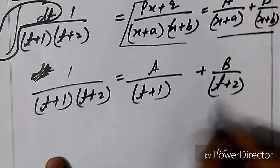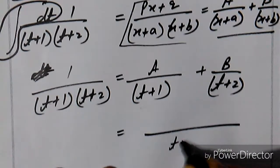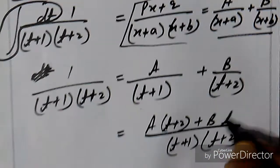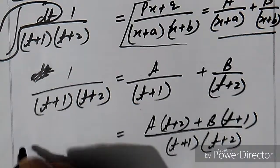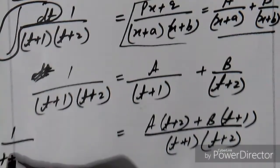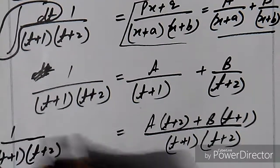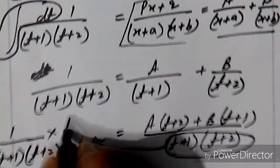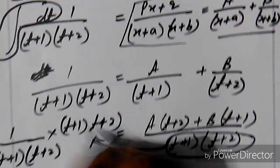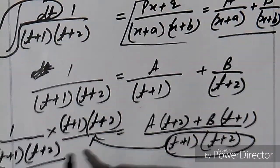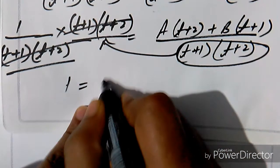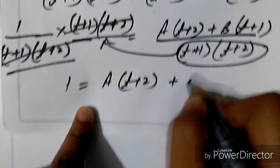To find the values of A and B, we take the LCM which is (t + 1)(t + 2). So we get: A(t + 2) plus B(t + 1). Taking (t + 1) to one side gives it in the denominator, resulting in multiplication by (t + 1)(t + 2). Since the denominators are the same, we cancel them and write: 1 equals A(t + 2) plus B(t + 1).